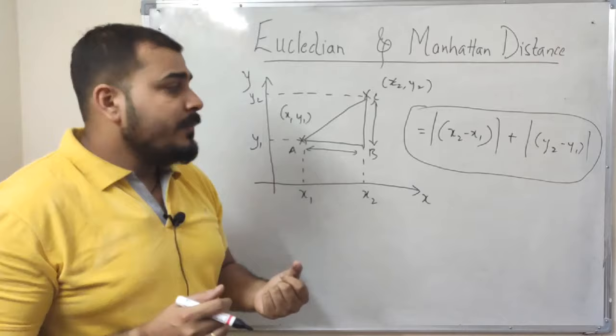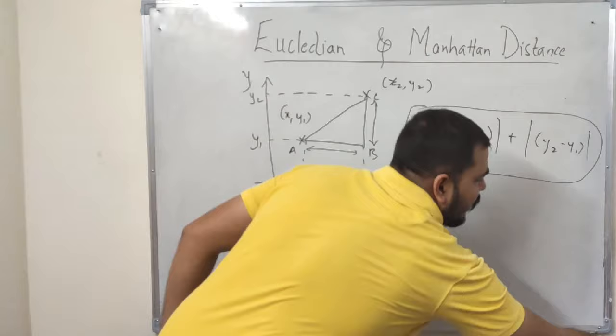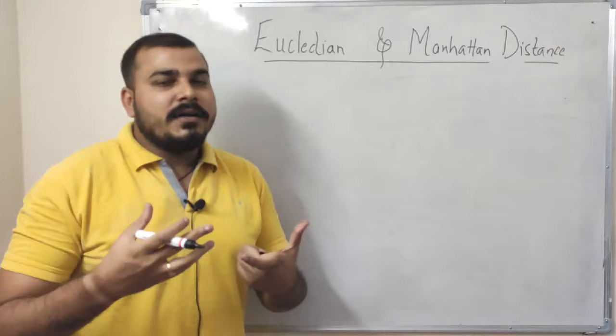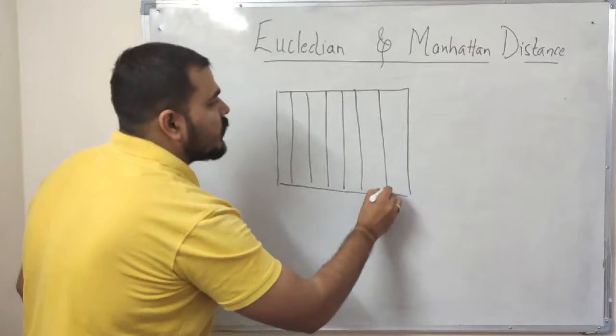Now this was pretty much about Euclidean and Manhattan distance. Now the question arises: where do we use this and where do we use Euclidean distance? Let me give you a very good example for this. And why the name Manhattan also I'll just tell you, and that is how I remember. So if you go in a developed country like like U.S., right there you'll be seeing that the whole city will be planned in block wise.